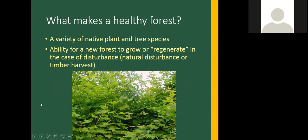I'm going to start by talking about the condition of New York's forests overall, which really applies to forests across the Northeast. I'll talk about how deer affect our woodlands, and then I'll introduce AVID — Assessing Vegetation Impacts from Deer — and explain how you can get involved. So what makes a healthy forest? Two very important components are that a variety of native plant and tree species can grow, and that the forest can regenerate in the case of disturbance — whether natural, like a blowdown or ice storm, or intentional, like a timber harvest.